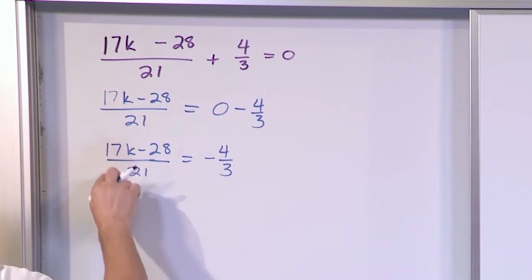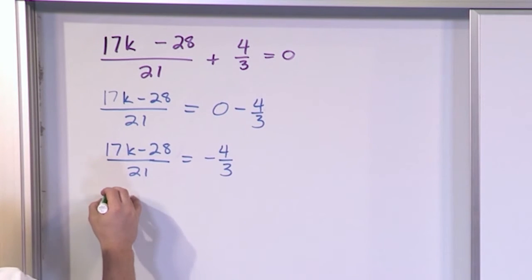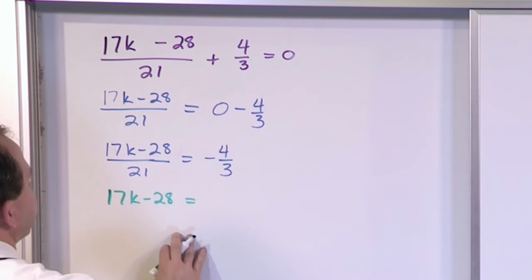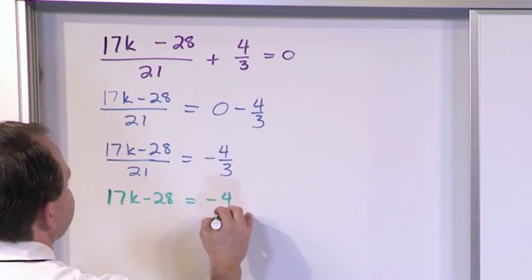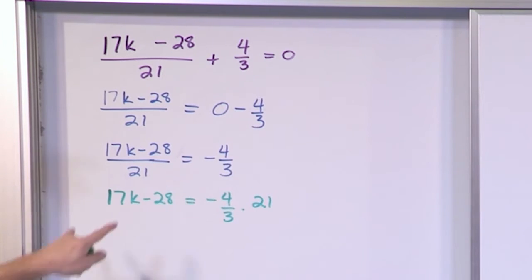Now we need to get rid of something over here. We're going to get rid of the bottom, the 21. We're going to multiply by 21. So when we do that, on the left-hand side, we're going to have 17k minus 28 is equal to, and on the right-hand side, negative 4 thirds times 21. On the left and the right, all we did was multiply by 21. We got rid of the 21. That's why it disappeared. We're still multiplying by 21 over here.